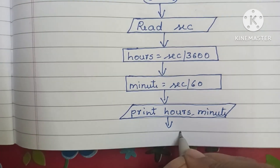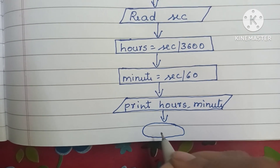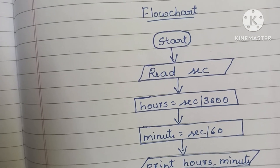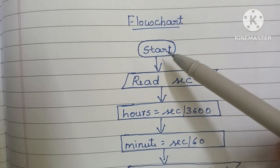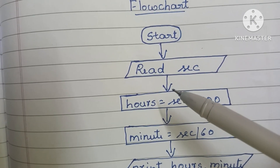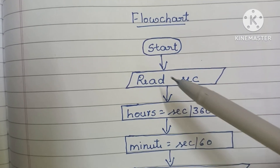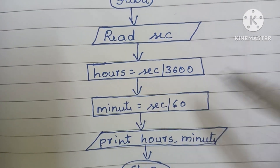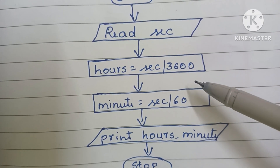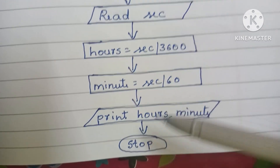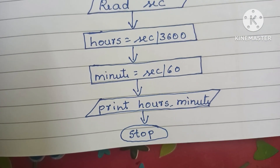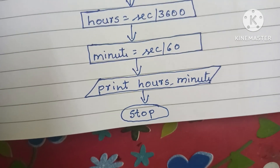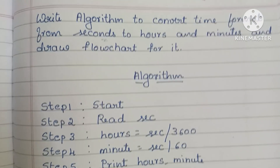Next, we stop the algorithm using a stop statement, written within an oval shape. So this is the flowchart to convert time format from seconds to hours and minutes: Start (oval) → Read Second (parallelogram) → Hours = Seconds / 3600 (rectangle) → Minutes = Seconds / 60 (rectangle) → Print Hours, Minutes (parallelogram) → Stop (oval).